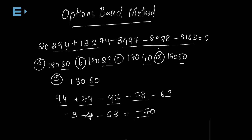We add the results — the result has a negative symbol. We subtract 100 and use these numbers. It comes to 30, so we have the last two digits as 30. Therefore the answer is 18030. Because the last two digits are 30, the answer is the first option.